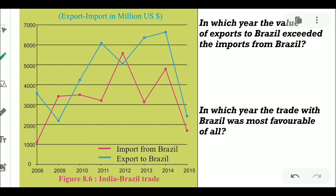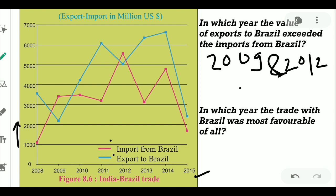Let's move to figure number 8.6, which explains India and Brazil trade. On the x-axis you have years, and on the y-axis the import-export in million US dollars. The blue line is for export to Brazil and the red line is for import from Brazil to India. In which year did the value of exports to Brazil exceed imports from Brazil? In the years 2009 and 2012, exports to Brazil exceeded imports from Brazil.